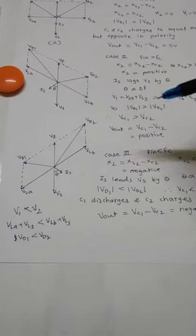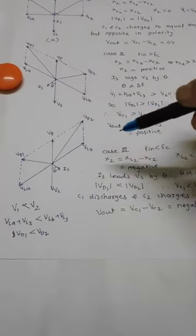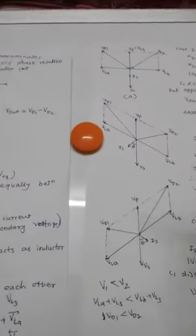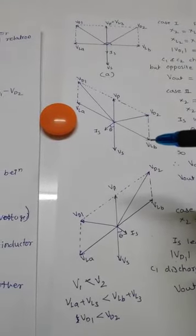So, Vd1 greater than Vd2, Vc1 greater than Vc2 and output voltage is positive. This one is the phasor diagram of the case 2.